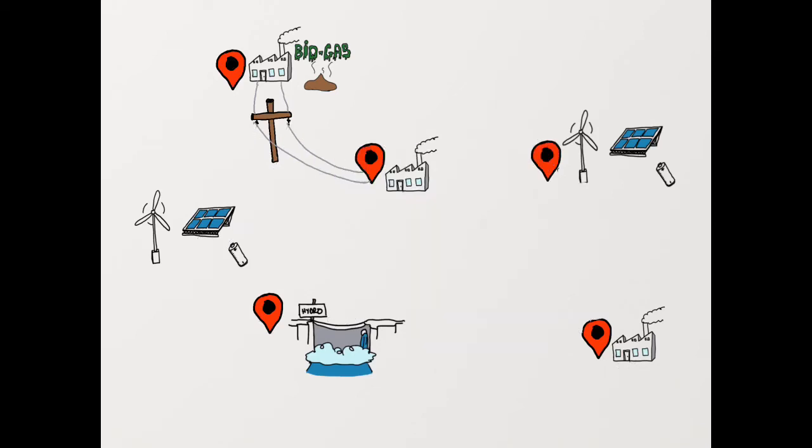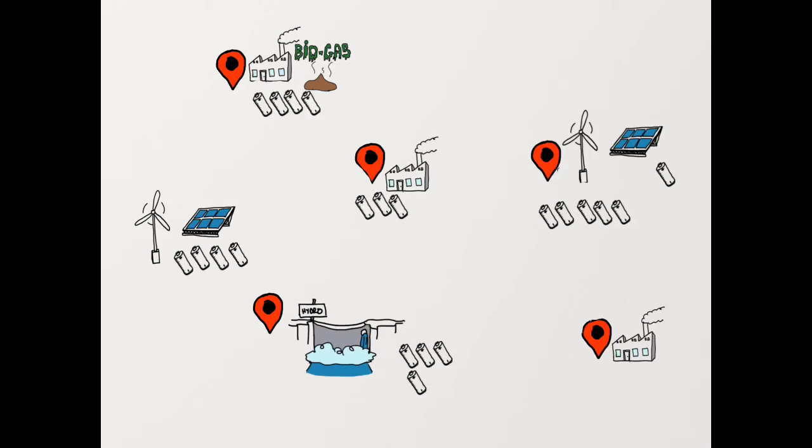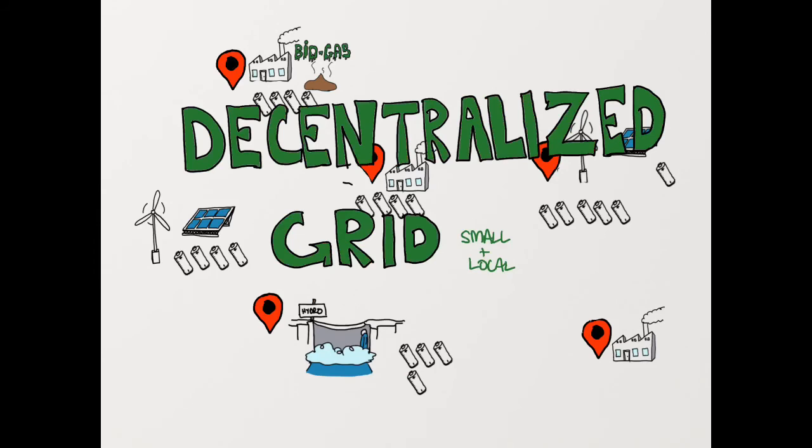The other option is to have enough energy storage at each location so that generators can accumulate power when it's windy and sunny, put it in batteries or other storage options, and then supply it when needed to end users. This idea of each place having point source generation and storage is sometimes called a decentralized grid.